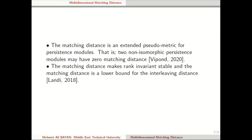Secondly, the matching distance is a good distance because it makes rank invariants stable. What we know so far is that the matching distance is a lower bound for the interleaving distance. This is a crucial statement because in the one-dimensional case, matching distance and bottleneck distance are equal — and even the interleaving distance and bottleneck distance are equal in one-dimensional, which is the so-called isometry theorem. But this is not true in the higher parameter case, which is one of the big differences between one-dimensional persistent homology and higher parameter persistent homology.